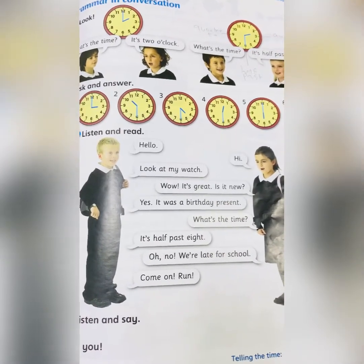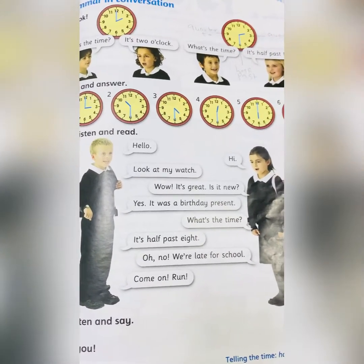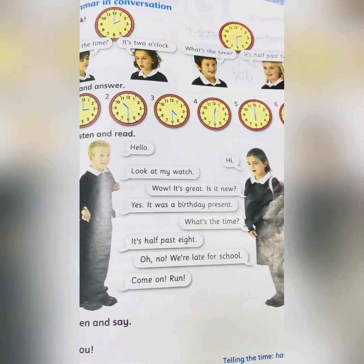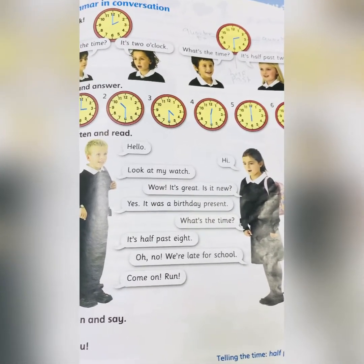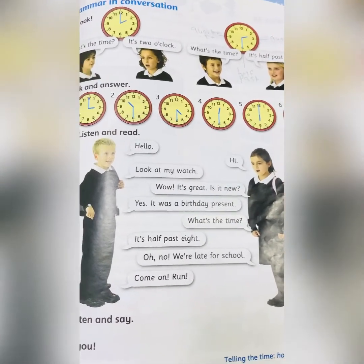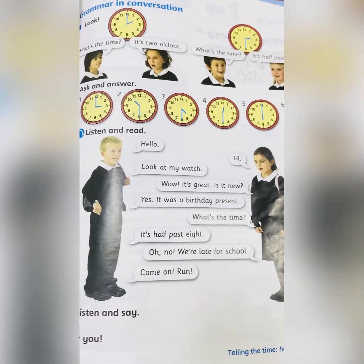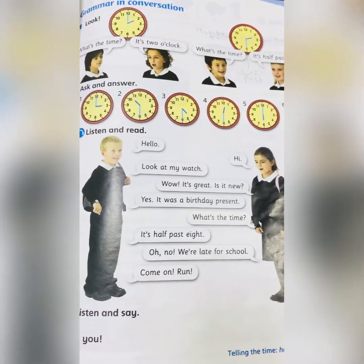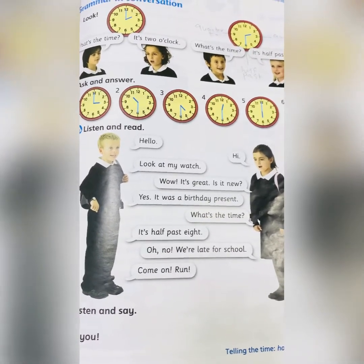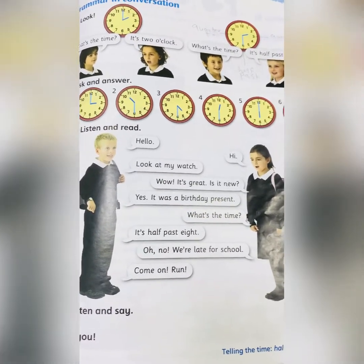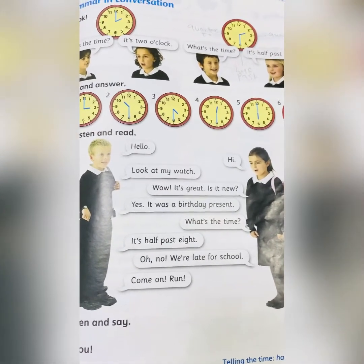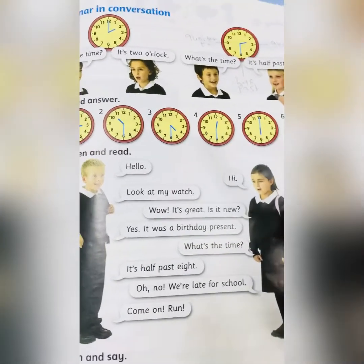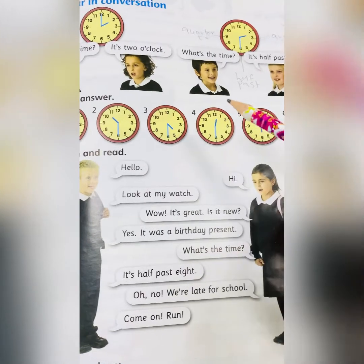As we know, at the last lesson we talked about the past and how we use 'was' and 'were' with them. Today we are talking about time. As we know, in the other unit we talked about time, but we only learned about how we read the number of the time.